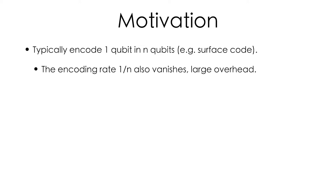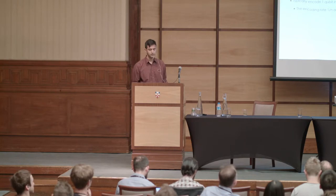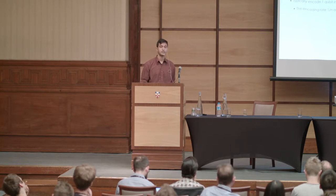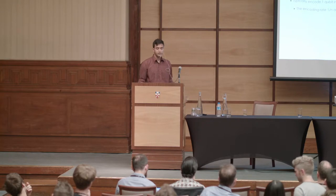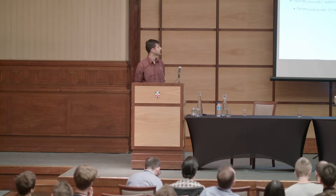Part of my motivation has become redundant because we've heard about these topics a lot over the past few talks, but I'll try and keep this short. Typically when we think of quantum error correcting codes, we think of codes such as the surface code or the color code, where we encode a single qubit into n qubits. The drawback, of course, is that the cost of encoding a single logical qubit increases as we increase the block size.